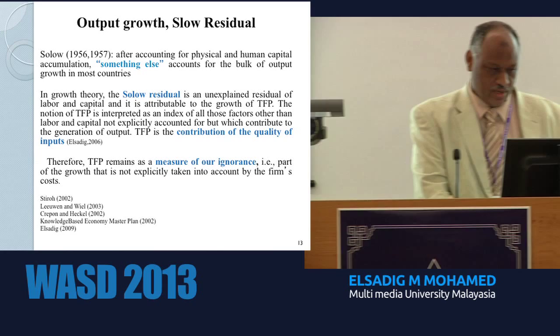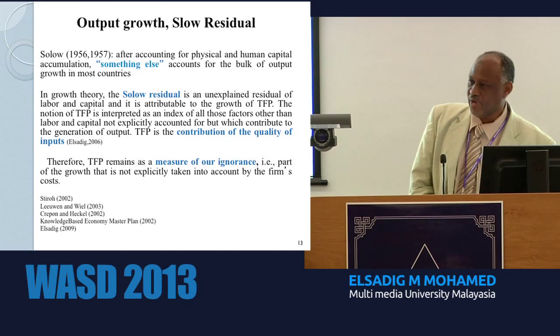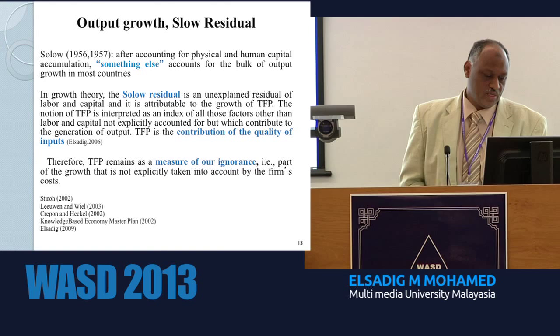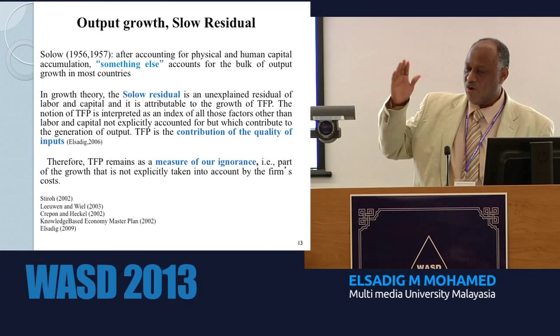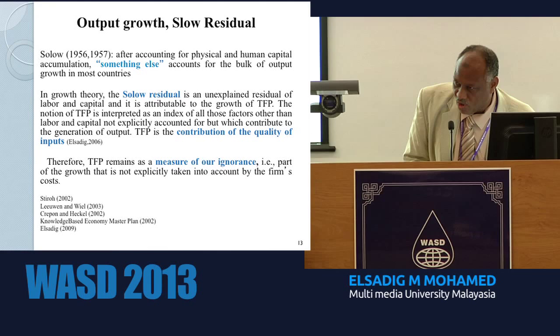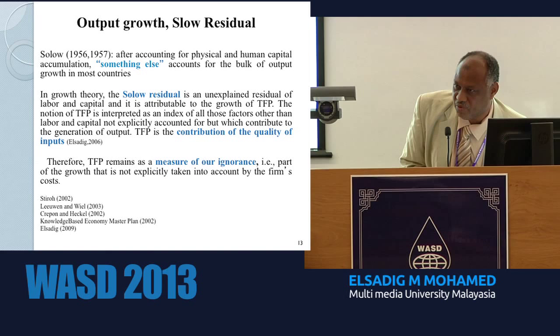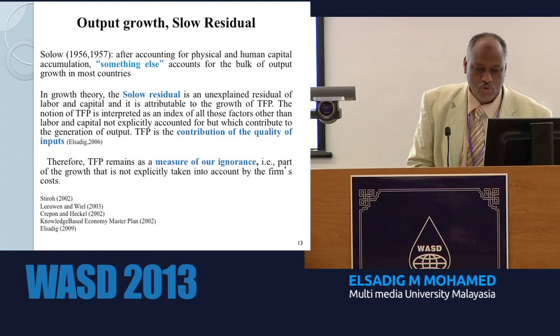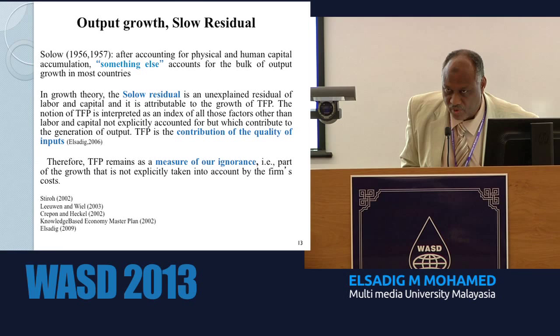This theory behind productivity was developed by Solow. We have something called the Solow model, which discovers total factor productivity. Solow says that after accounting for physical inputs and output, there is something else based on the quality of inputs — called Solow residuals, referred to as the measure of our ignorance. We ignore how differences between nations arise, how the technology gap occurs — maybe due to human capital, quality of physical capital, or quality of any inputs. When we talk about quality, we talk about Solow residuals, total factor productivity, or technological progress.